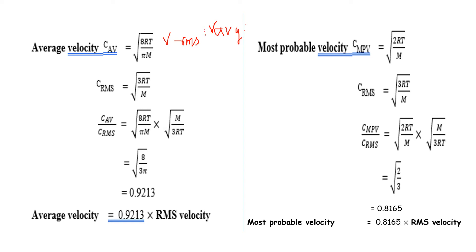So we have root mean square velocity, average velocity, and most probable velocity. The formulas involve temperature T, molecular mass m, and the gas constant R.